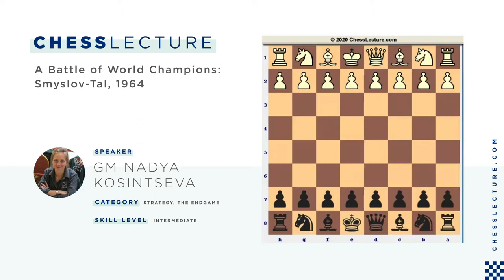Hello everyone, this is International Grandmaster Nadezhda Kosinseva for ChessLikeChess.com. Today I would like to analyze one of my favorite classical games between two former world chess champions. This game was played between Vasily Smyslov and Mikhail Tal. The game started with the first c4 move, the so-called English system.